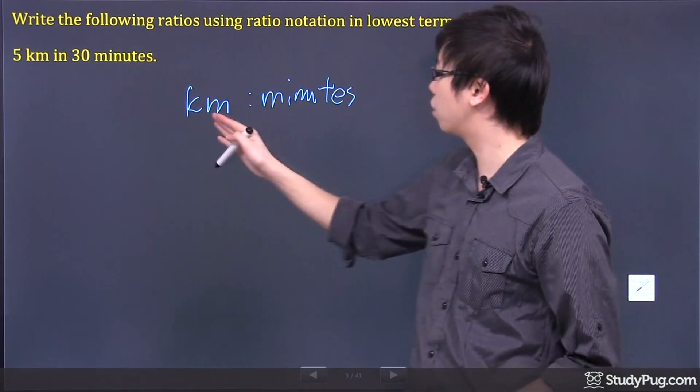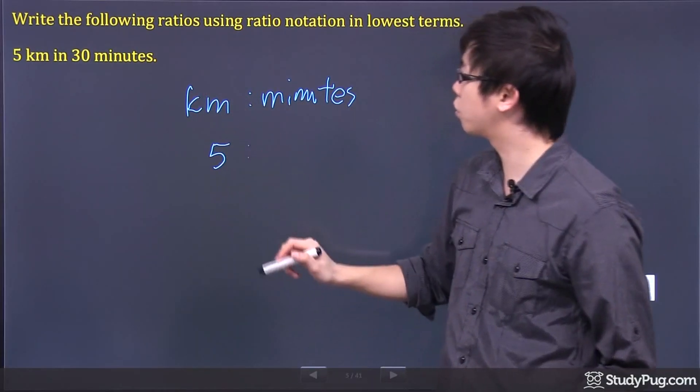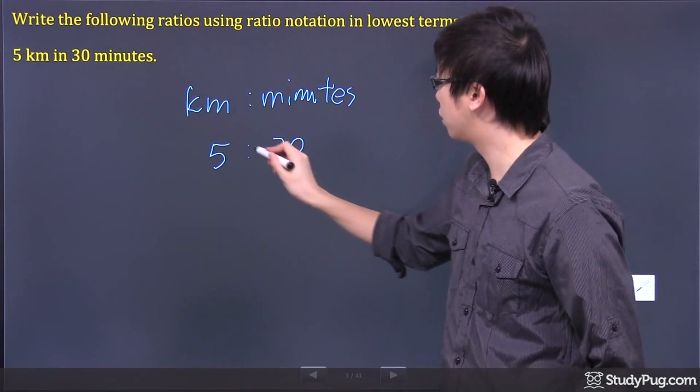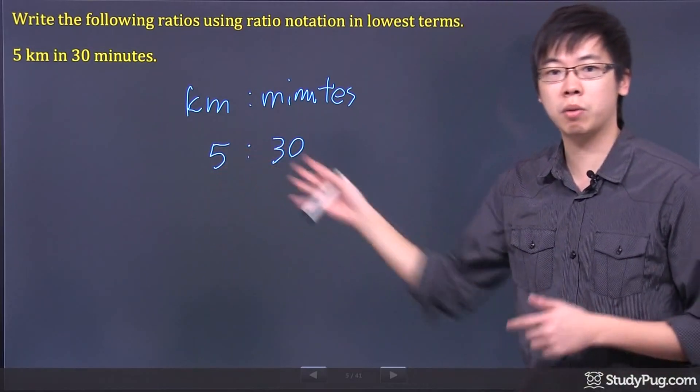If you read the question, we actually have five kilometers corresponding to 30 minutes. So that's the ratio. For every five kilometers, you have 30 minutes.